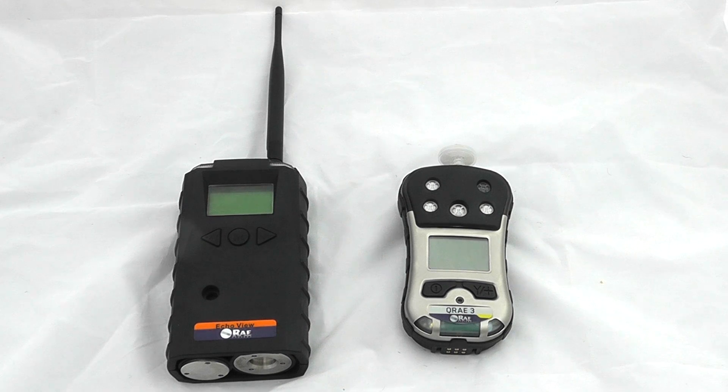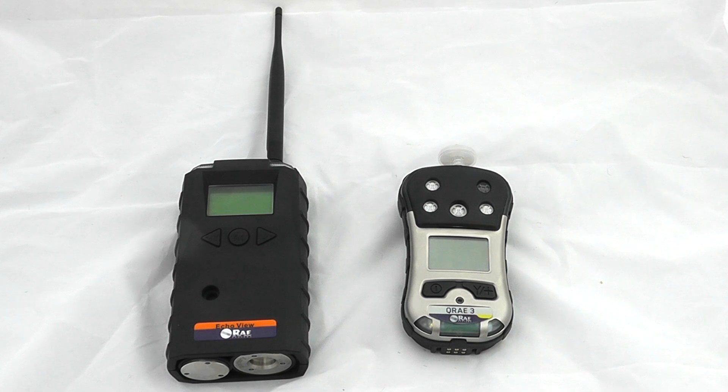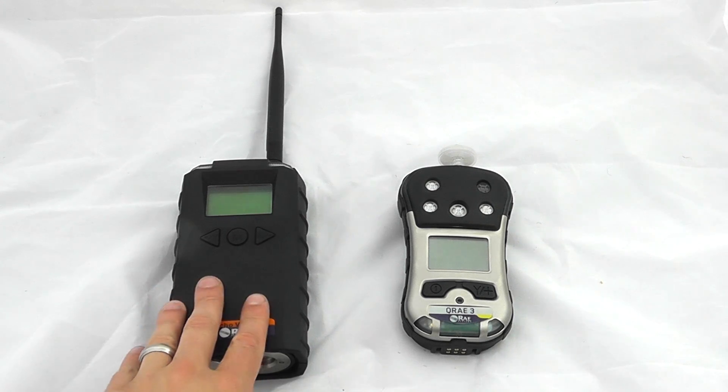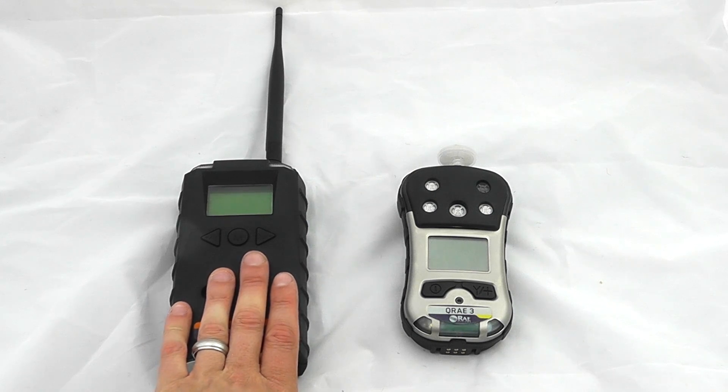Here we have an introduction to the Echo View and Q-Ray 3 from Ray Systems. The Q-Ray 3 is covered in another video showing operation and calibration. This video focuses on the Echo View device, which provides a closed-loop wireless network capable of monitoring multiple instruments.